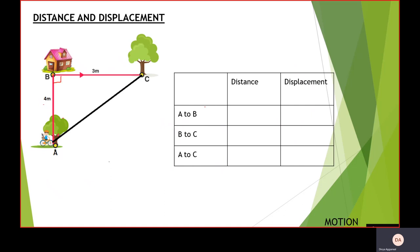Now let's solve another question. We have a right-angle triangle, right-angled at B. A cyclist goes from A to B: the distance traveled is 4 meters and the displacement is also 4 meters, since the path is straight. For B to C, the distance traveled is 3 meters and the displacement is also 3 meters. For A to C in the clockwise direction, the distance is 4 plus 3, which equals 7 meters.